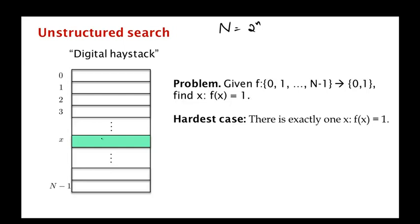The question is how many times do we have to evaluate f. Classically we have to do this at least N/2 times, and we are aiming to solve this problem with only square root of N evaluations of f(x).